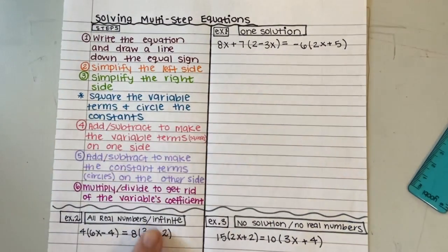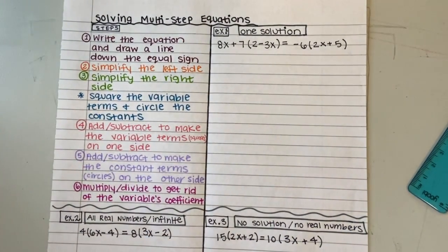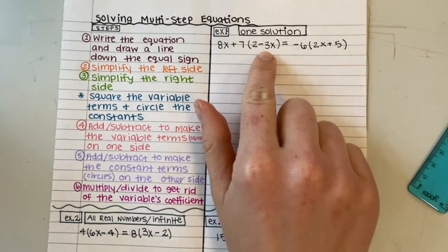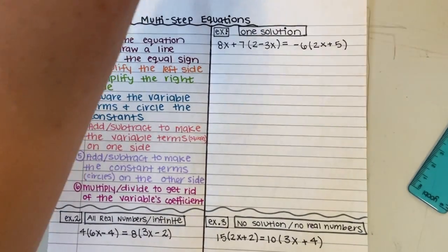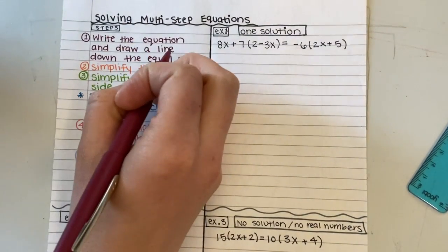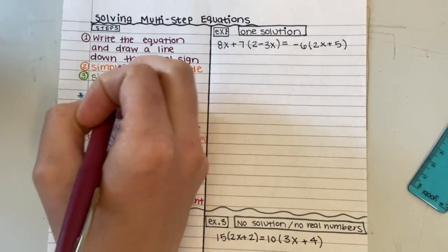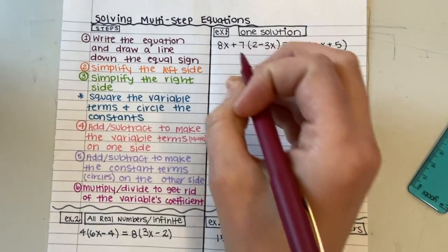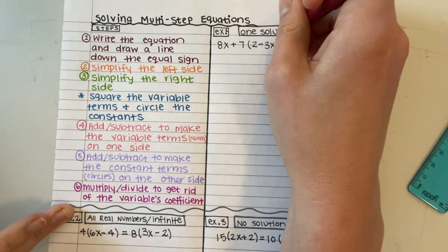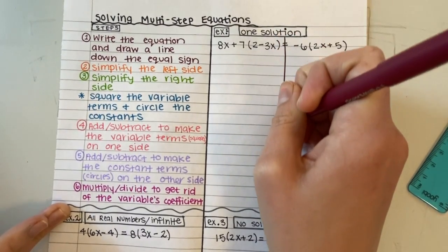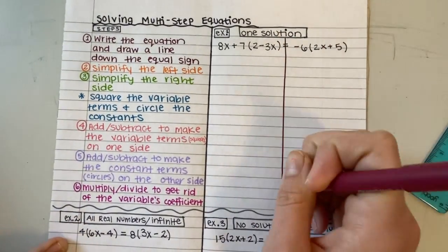So when we're following these steps, we can get an answer for x. What I'm going to do for my first step is write the equation down and draw a line down the equal sign. So I've written down the equation and I need to draw my line to keep the sides separate from each other.